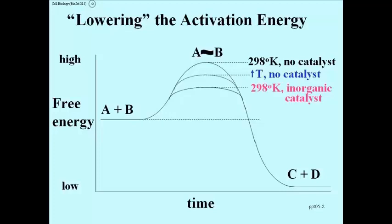We can throw in an inorganic catalyst in a test tube for a chemical reaction that might occur in a cell. So we could conduct that reaction at standard temperatures at 298 degrees Kelvin in the presence of an inorganic catalyst, and that would even more efficiently lower the energy barrier to the progress of the reaction.